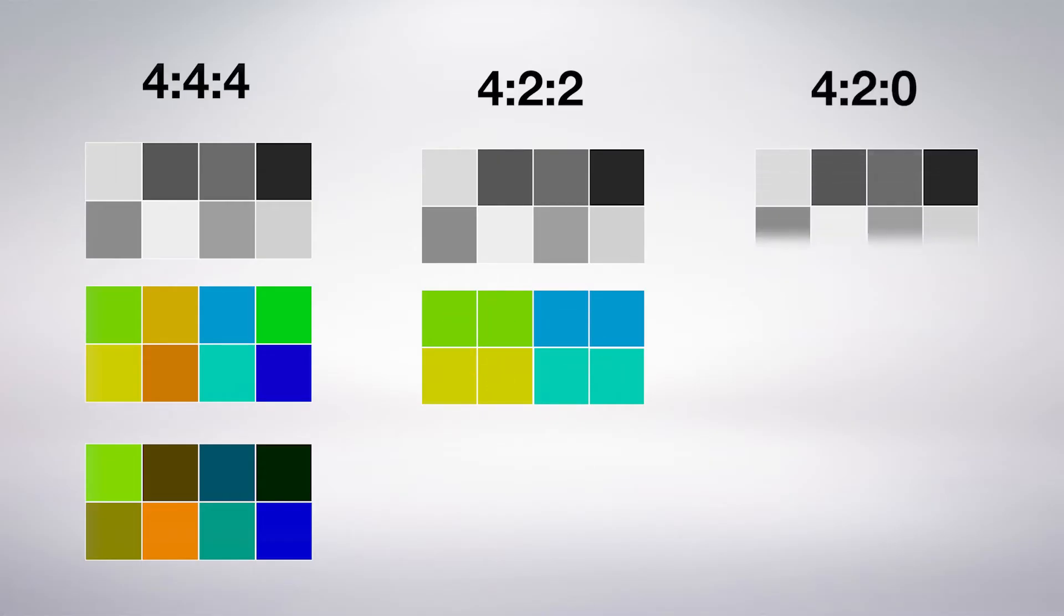And as you've probably figured out, that means that 4:2:0 means that the two pixels in the top row share color information, but the pixels in the bottom row also share the same color information. Compared to 4:4:4, these files can be as little as a third to a quarter of a size.